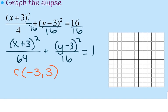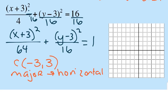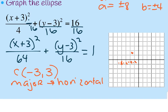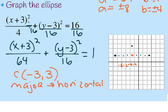Since a-squared is 64, a is plus and minus 8. Since b-squared is 16, b is plus and minus 4. From center (-3, 3), I go over 8 on the horizontal — 2, 4, 6, 8 in each direction — and 4 on the vertical. Then I draw my ellipse.